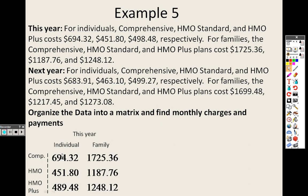Comprehensive individual was the following, the 694.32, so I filled it in that way. HMO for the individual is 451, and HMO plus was 489. Then the following year, or actually in the same year for the families, it was 1725 for comprehensive, 1187 for HMO. It says right there, 1187 for families. And so on. There's your first matrix.